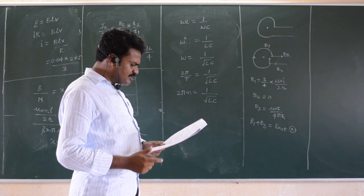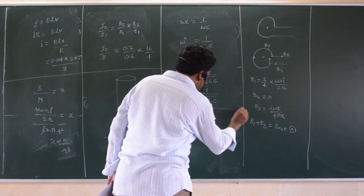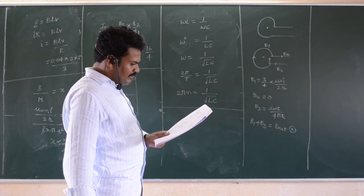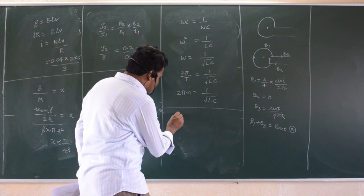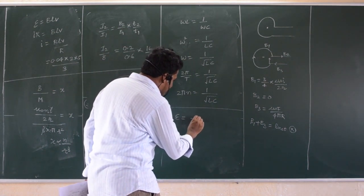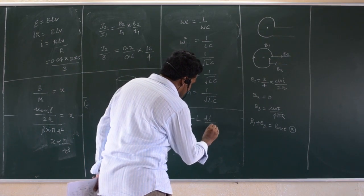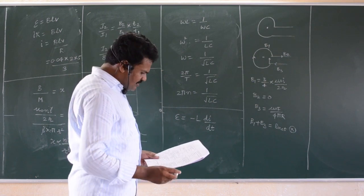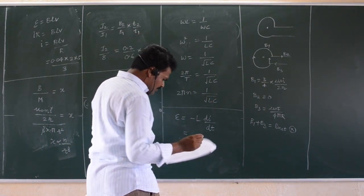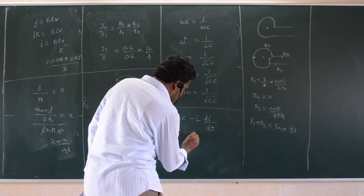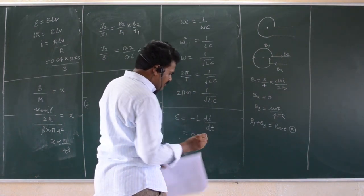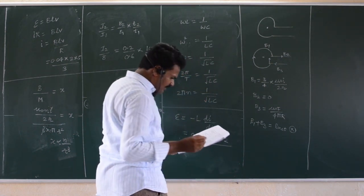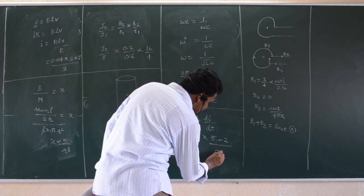The current in a coil changes from 5 amperes to 2 amperes in 0.5 seconds. This is a direct self-inductance EMF formula: EMF equals minus L di by dt. L value is given as 0.2. So EMF equals 0.2 into (5 minus 2) divided by 0.5 seconds. Very simple question.